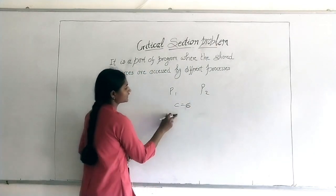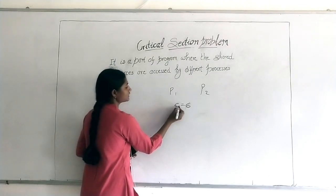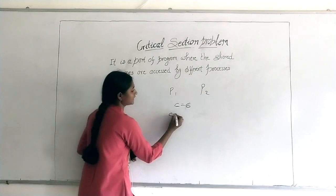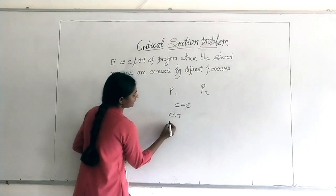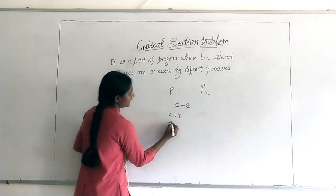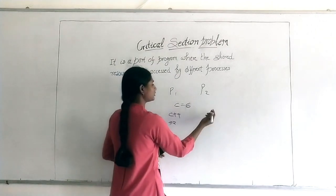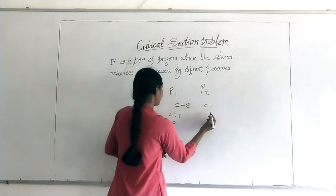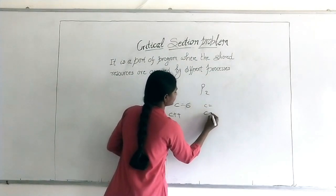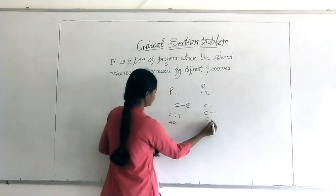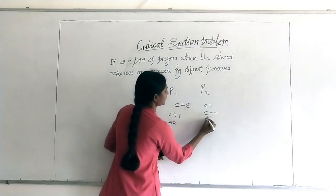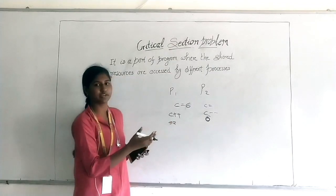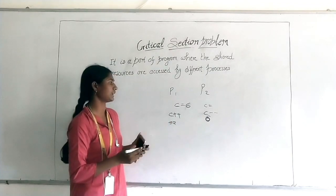Let the value of C be 6. When P1 goes to the critical section and it wants to use it, if it is doing incrementation, it will change the value from 6 to 7. And when the second process goes, if it is doing C minus minus, it will again put the value back to 6. So we are using the same resources but getting different, wrong outputs.